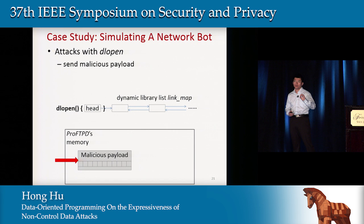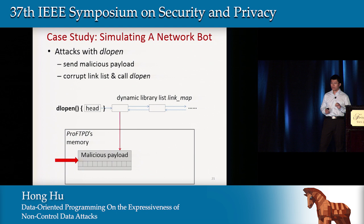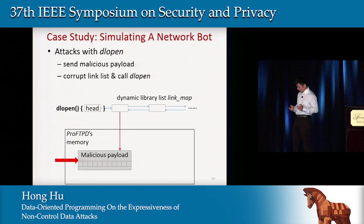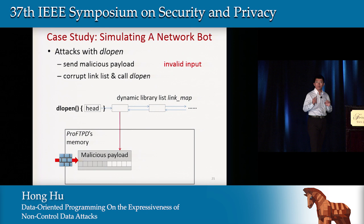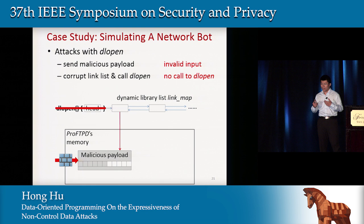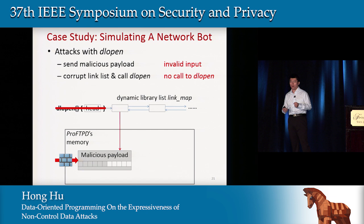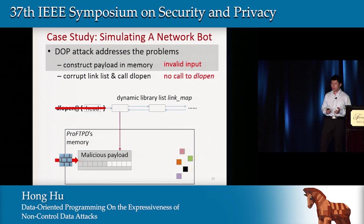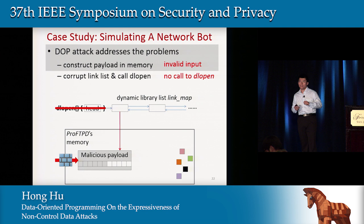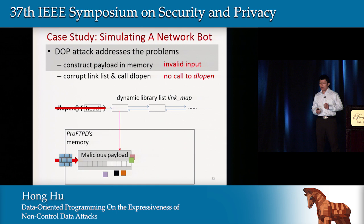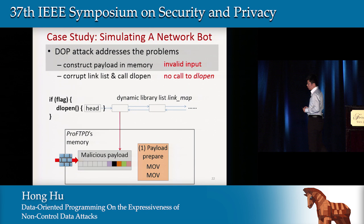The general method is: attackers send a malicious payload into memory space, corrupt the linked list, and wait for the DL open call — which then performs the computation for them. But in real-world programs there are challenges: the program has sanitization code that prevents invalid bytes from being sent directly into memory, and the program may not call DL open at all after the memory error. DOP helps here: we use DOP with a move gadget to construct the malicious payload in memory, bypassing sanitization, and we find a flag in the program that decides whether to call DL open, then use DOP to corrupt that flag and force the DL open call.